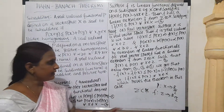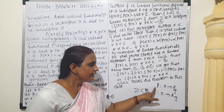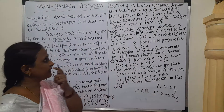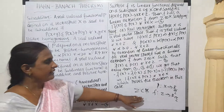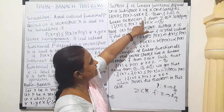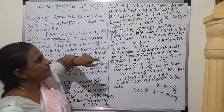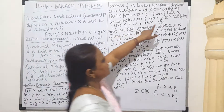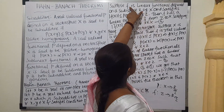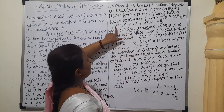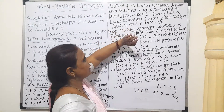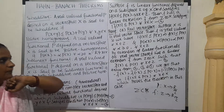Here, P is the sub-functional defined on X, and F is the linear functional on Z. Then we know it can be extended. Let F̄ be the extension from Z to X — it is the extension of the linear functional F such that |F̄(x)| ≤ P(x). This is what we have to prove.